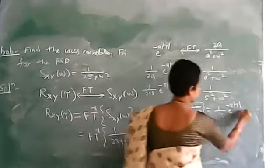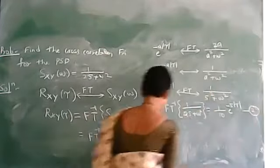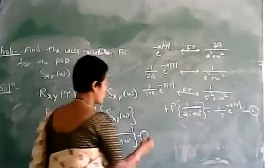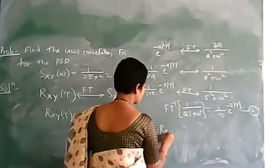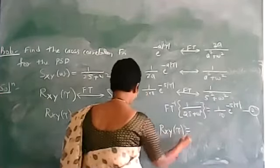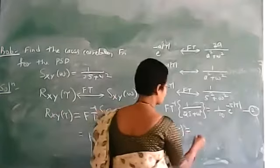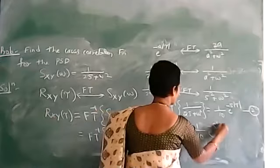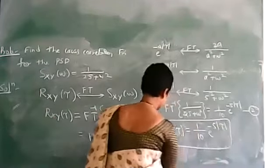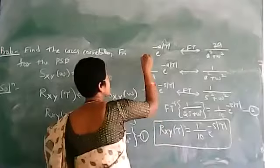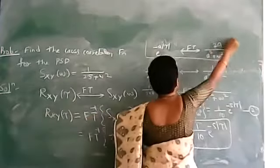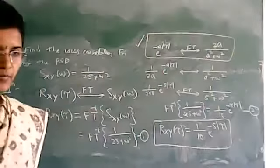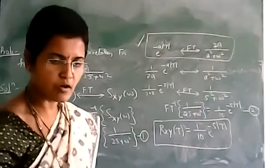Substituting this result, the cross-correlation function R_xy of tau equals 1 by 10 times e to the power of minus 5 mod tau. You must remember this relation — if you don't know this Fourier transform pair, you cannot solve the problem. That is why all important Fourier transform pairs should be memorized.